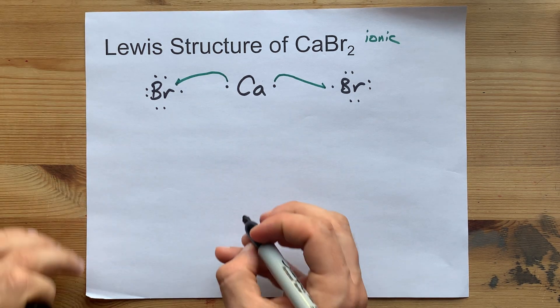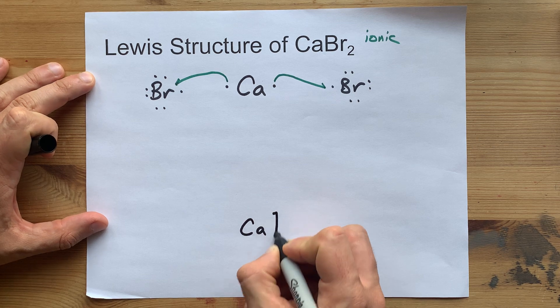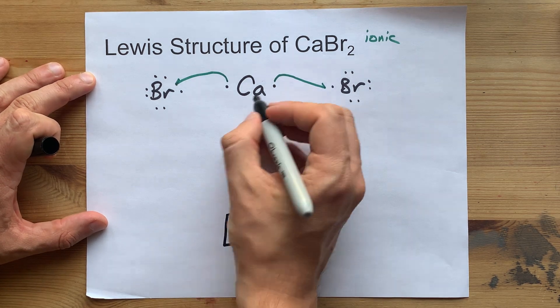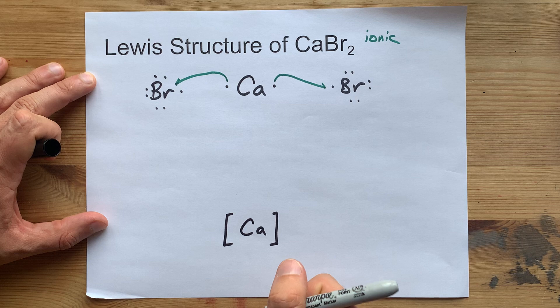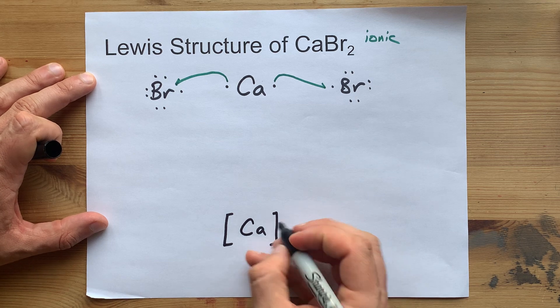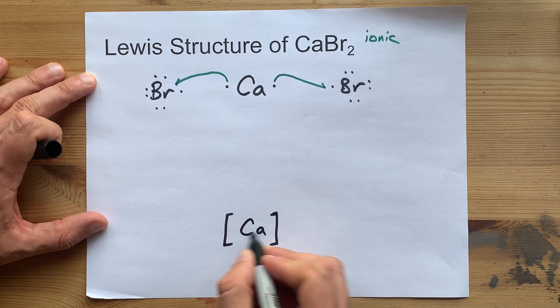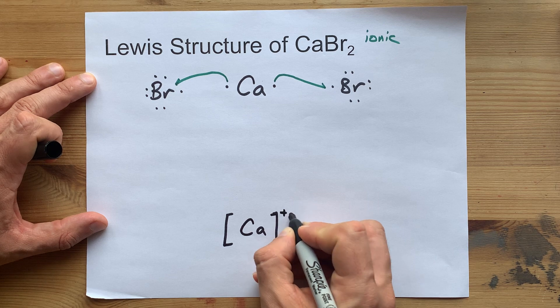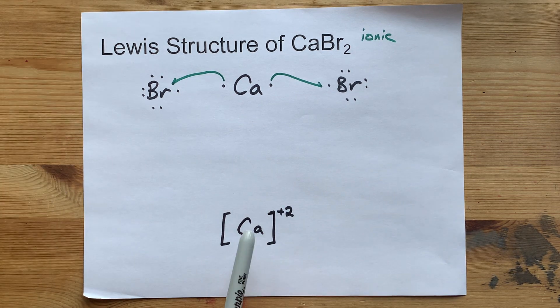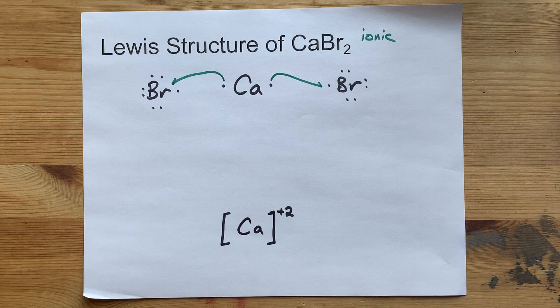The final Lewis structure for this is going to have Ca with no electrons around it because it gave away both of its valence electrons. We put square brackets around it if it gained or lost electrons and show the charge in the top right corner. You've made a Ca+2 ion.